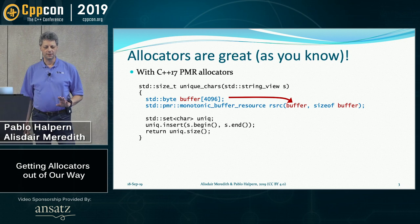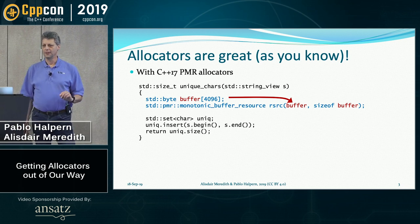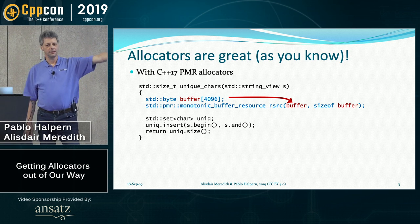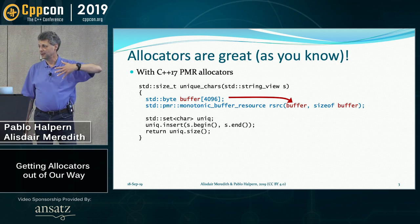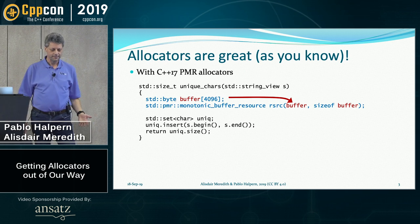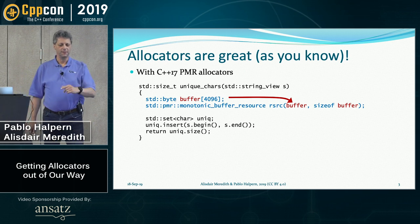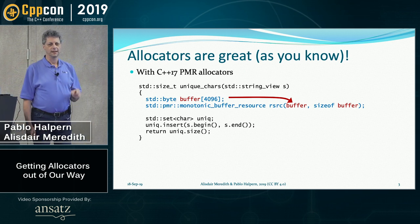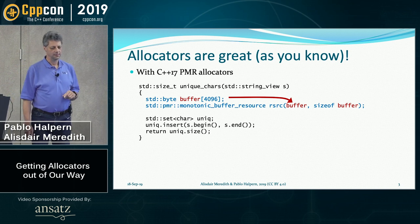We're going to use a standard resource called the monotonic buffer resource that is going to allocate from that buffer. Now, if it runs out of space in that buffer, it's just going to go to the general heap and get another buffer, another block, and allocate from that. It'll keep doing that. But if it fits within this buffer, it'll never go to the heap at all.